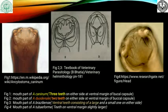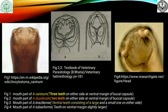The third picture shows the mouth part of Ankylostoma braziliense, where the ventral teeth consist of a large and a small one on either side. The fourth picture shows the mouth part of Ankylostoma tubaeforme, where the teeth on the ventral margin are slightly larger than those of Ankylostoma caninum.